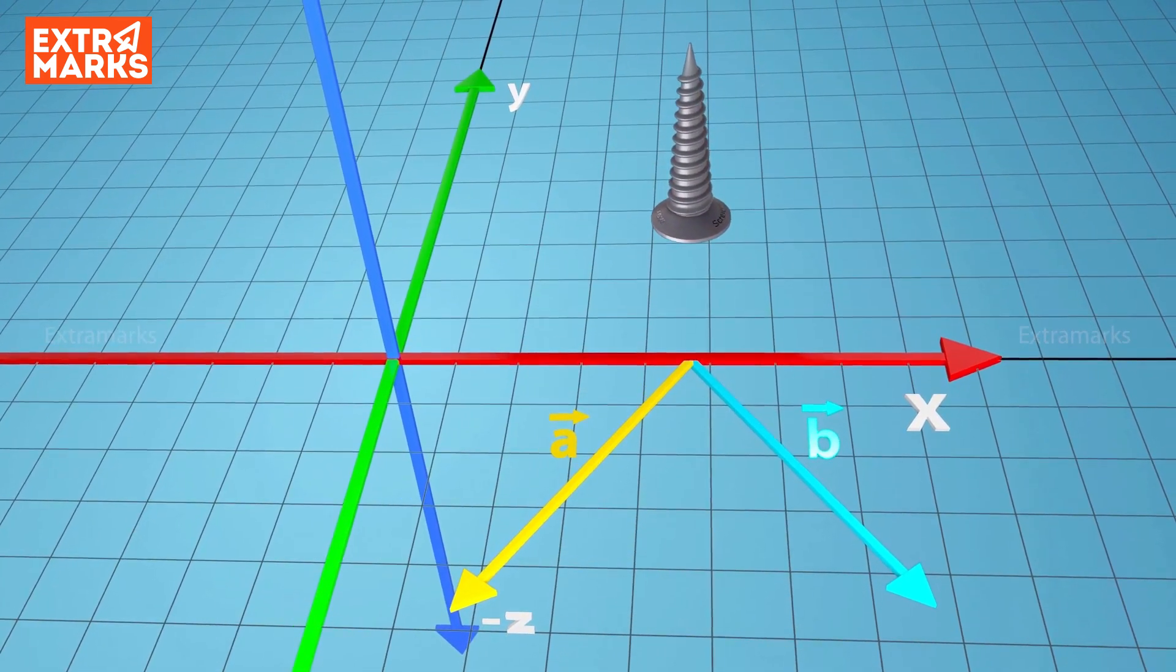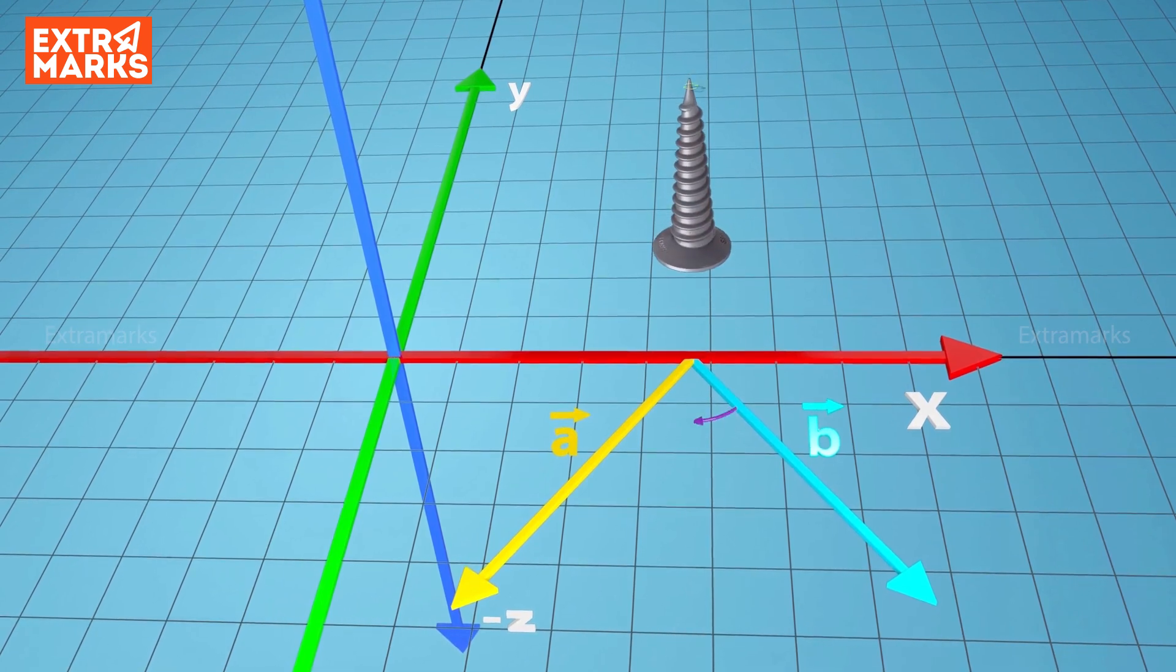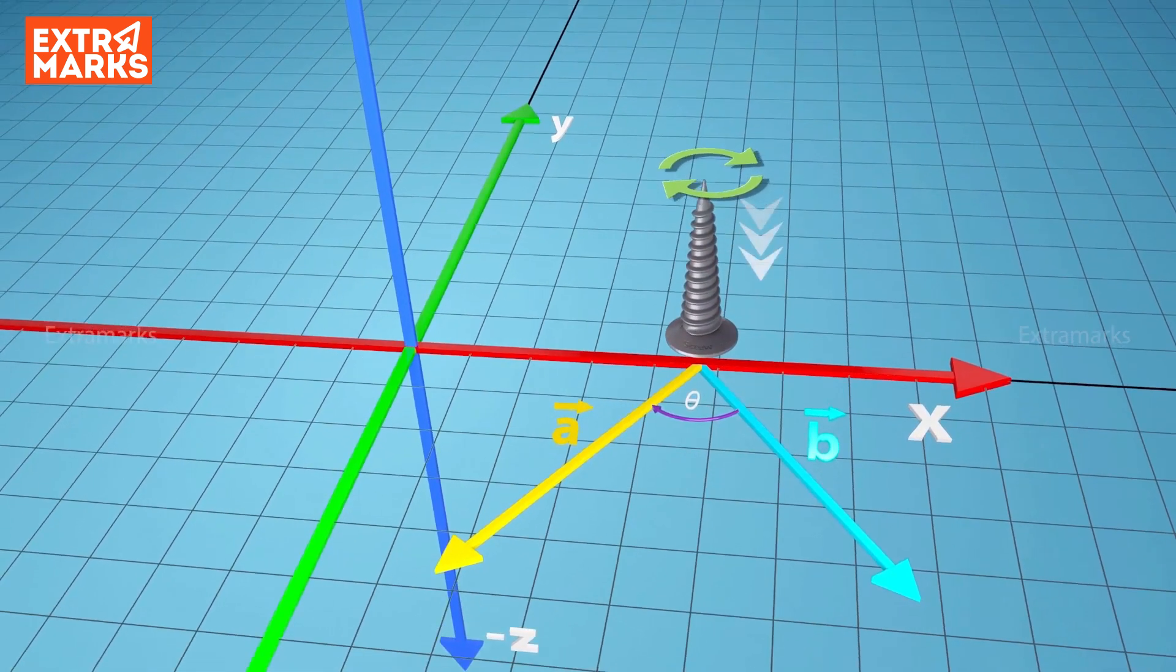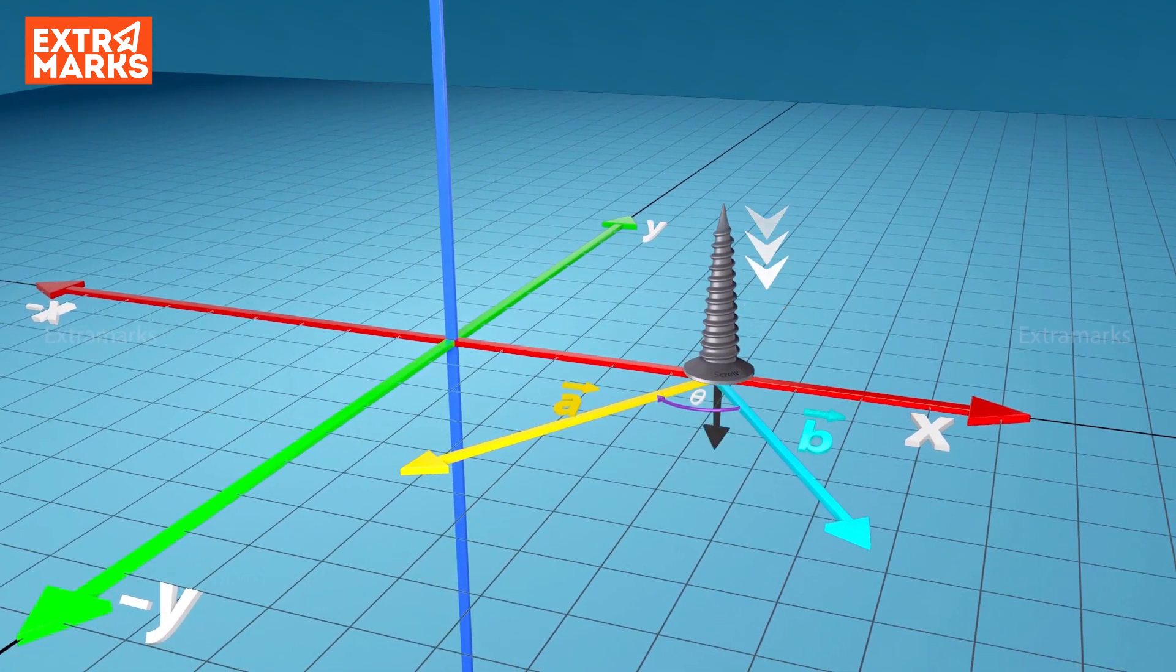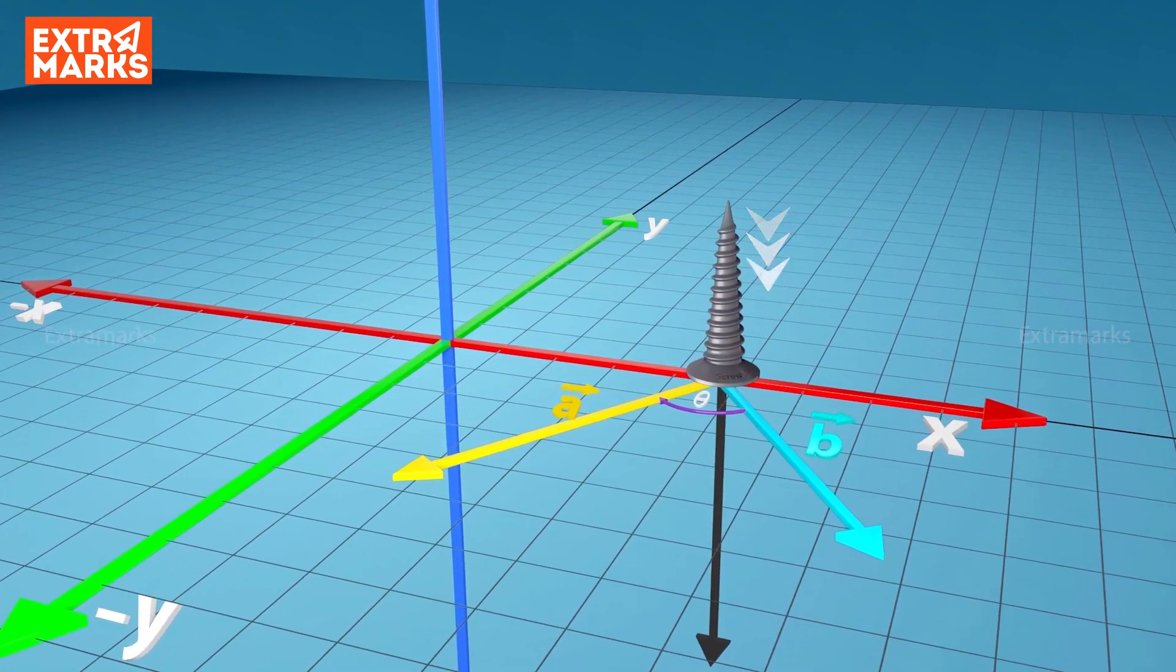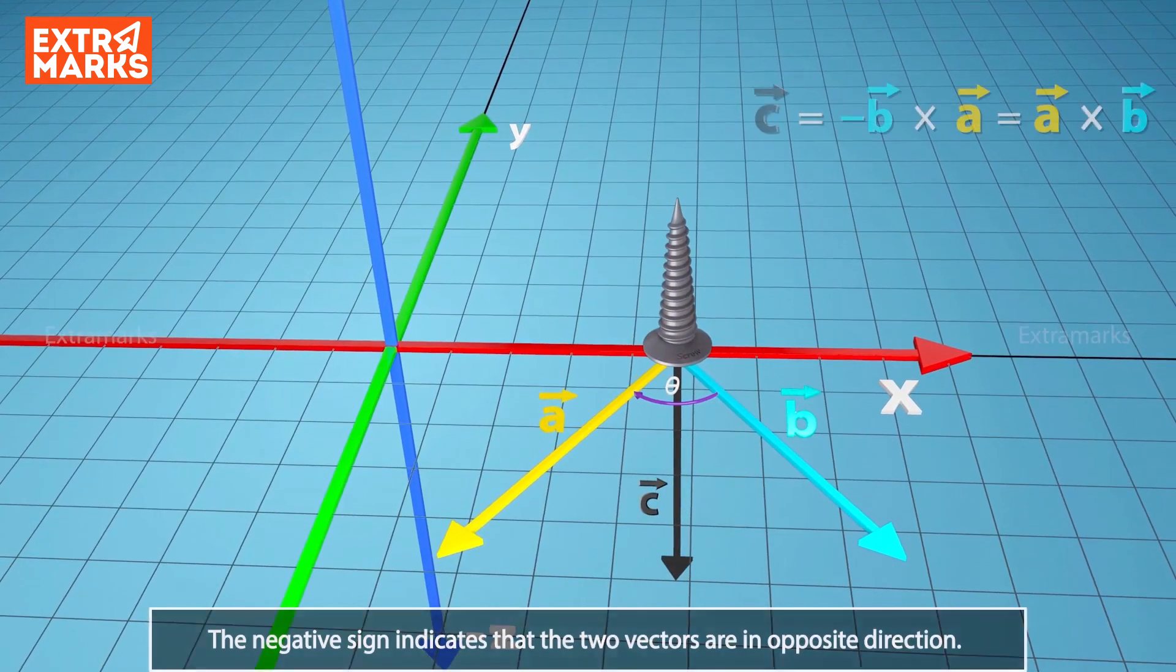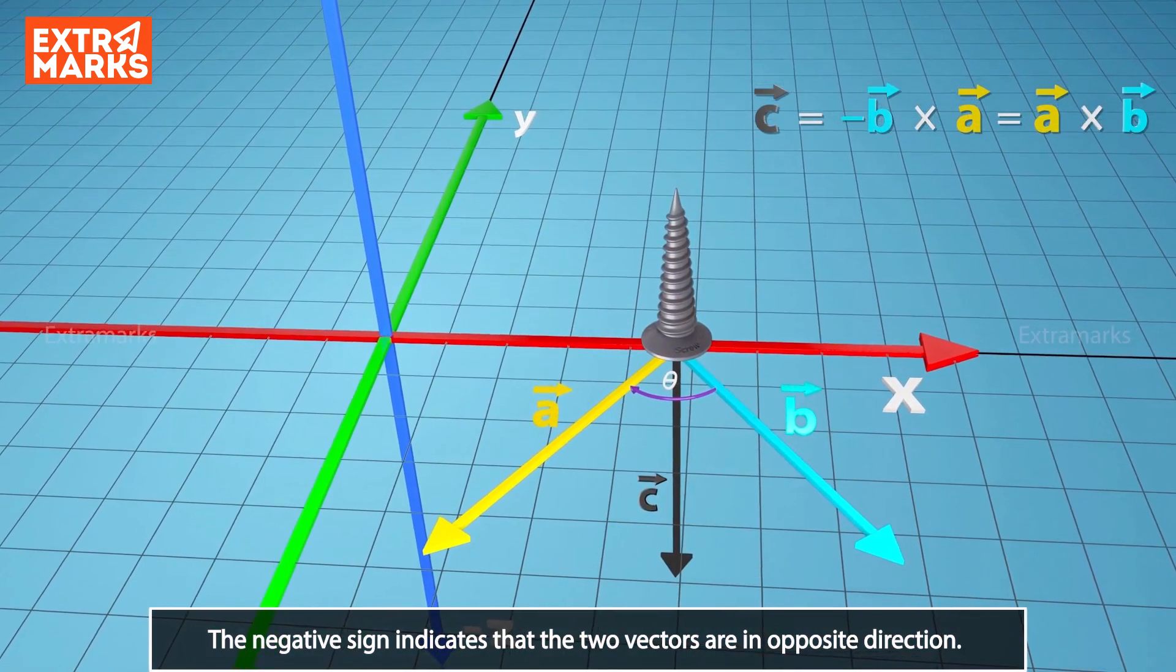If the screw is turned in the direction from B to A through the smaller angle theta, then it advances in downward direction perpendicular to vector A and B, representing the direction of vector C, i.e. the vector product of B cross A.